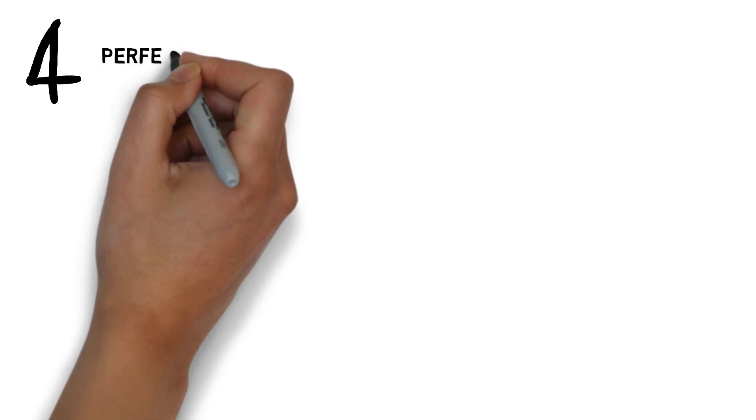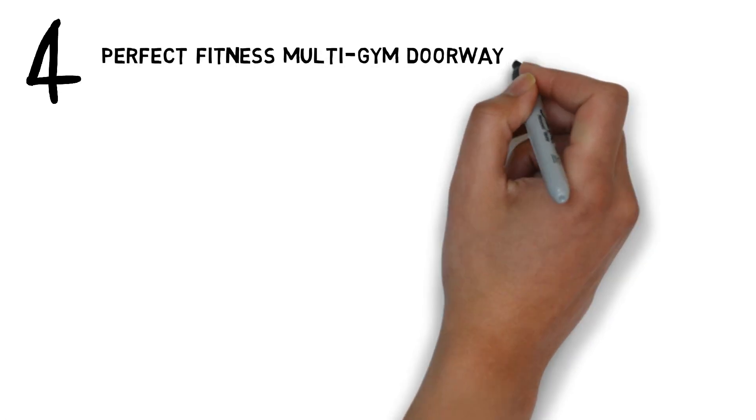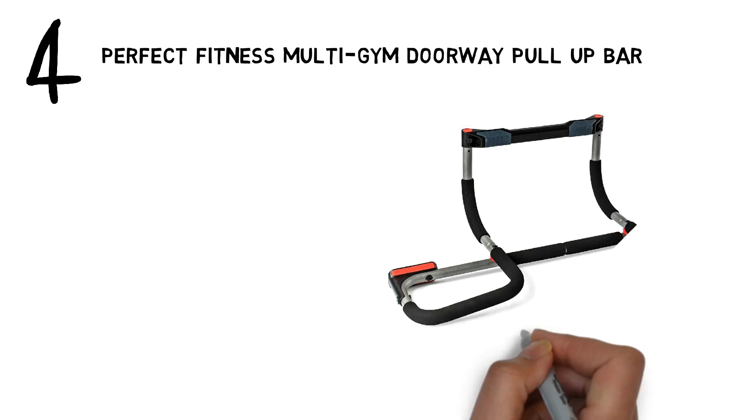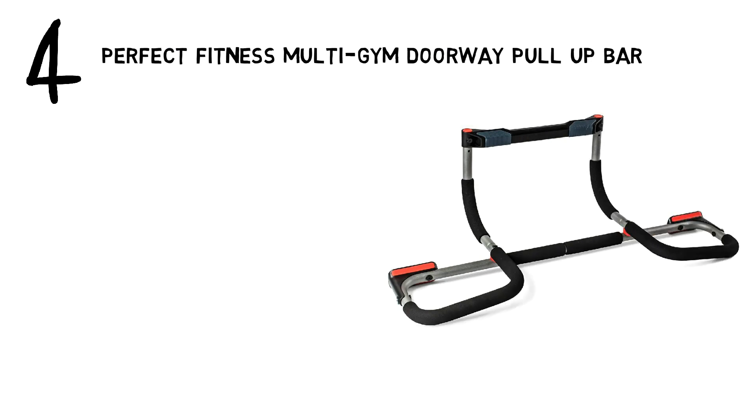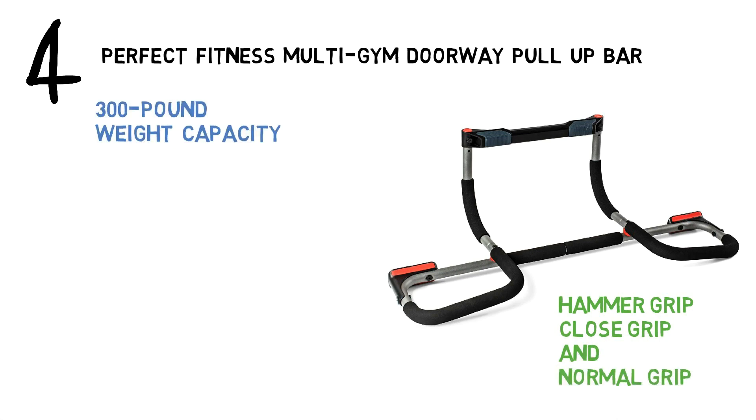At number 4 we have the Perfect Fitness Multi-Gym Doorway Pull-Up Bar. The Perfect Fitness Multi-Gym Doorway Pull-Up Bar has three padded grip positions for hammer grip, closed grip, and normal grip pull-ups. The 300-pound weight capacity makes it so you can use this model with a weight vest.